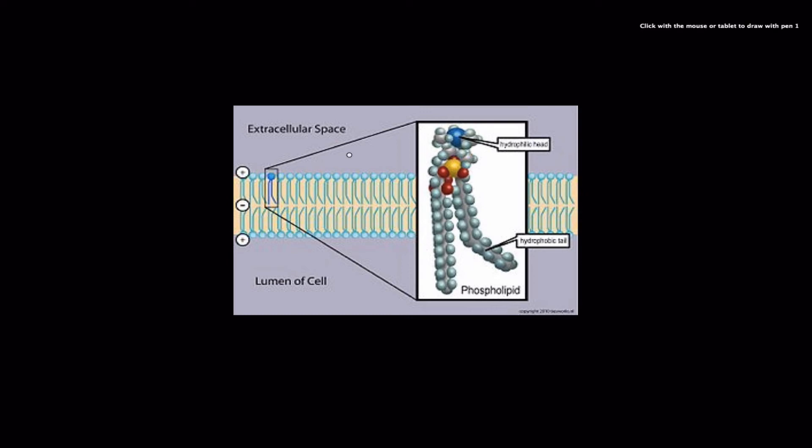Phospholipids arrange themselves in a bilayer because if you think about it, if you've got water outside the cell and you've got a water-based cytoplasm inside the cell, the only way these phospholipids can orient themselves is with their tails pointing towards the middle and their heads forming two walls facing the water molecules. Remember, we got water out here and water out here. So this satisfies the requirements of this weird molecule.